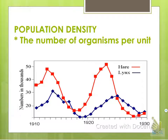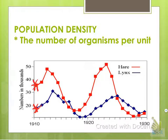Population density is the number of organisms per unit — whether that's a centimeter, meter, kilometer, or mile. Looking at this graph, the blue shows your lynx and the red shows your hare, which is like a rabbit. It shows how the population moves based on numbers. The hare, a natural prey species of the lynx, is directly affected by the lynx population.